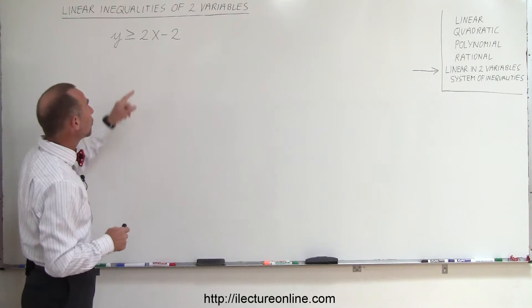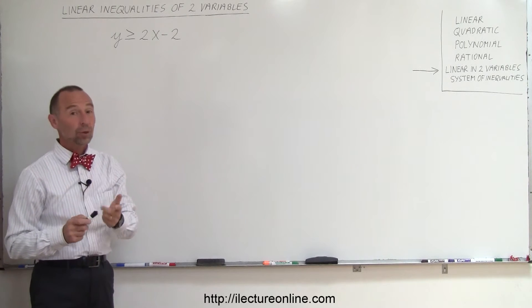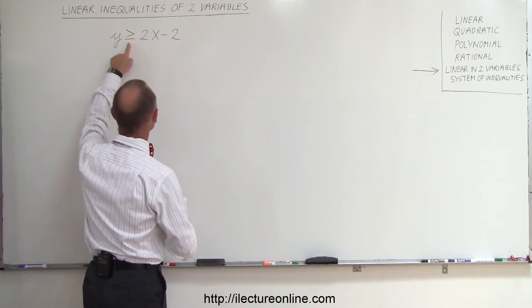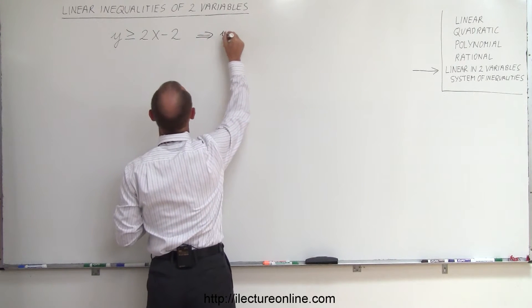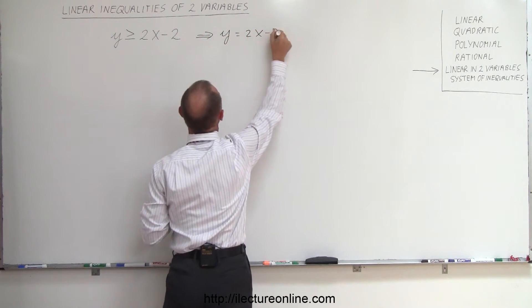Well, the easiest thing to do is to take this inequality and first turn it into an equation. So change the inequality symbol into an equation symbol. So we then write y is equal to 2x minus 2.